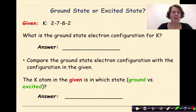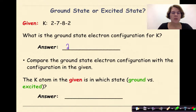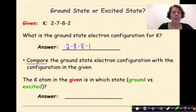We have potassium with an electron configuration of 2-7-8-2. What is the ground state electron configuration for potassium? We would go to our reference tables, find our periodic table, look up the symbol for potassium, and the ground state would be 2-8-8-1. Now we're going to compare the ground state electron configuration with the configuration given. The potassium atom in the given is in the excited state, because we look at the ground state 2-8-8-1 and see that one of the electrons from the second principal energy level has jumped up to the fourth principal energy level.